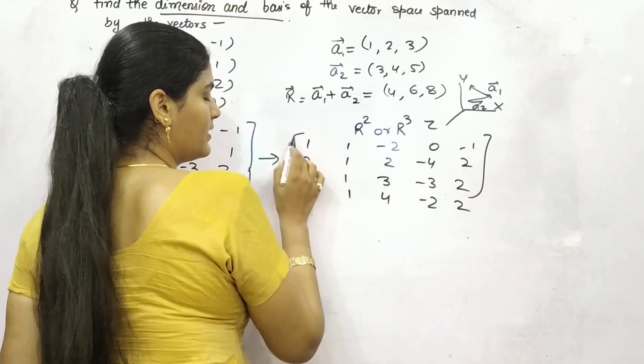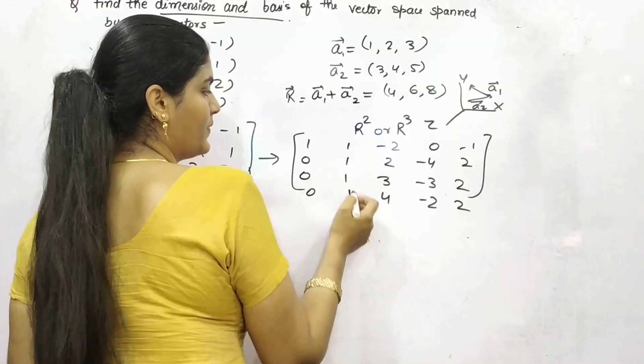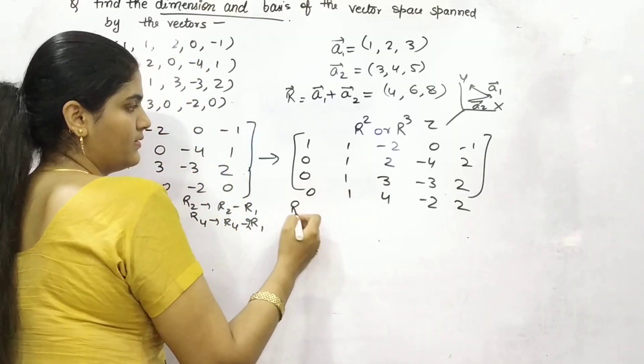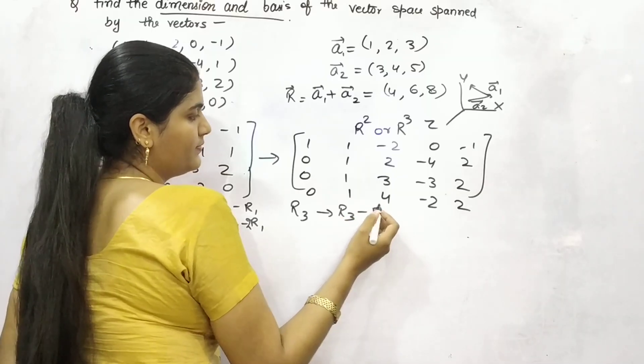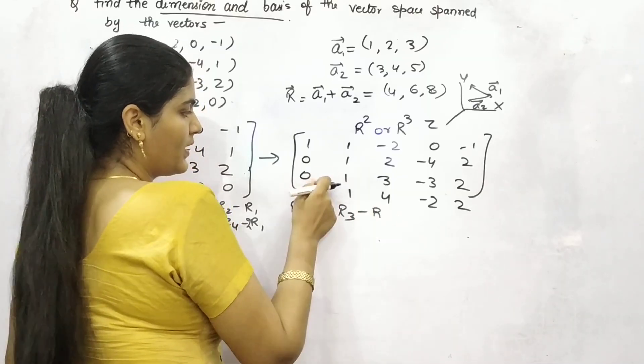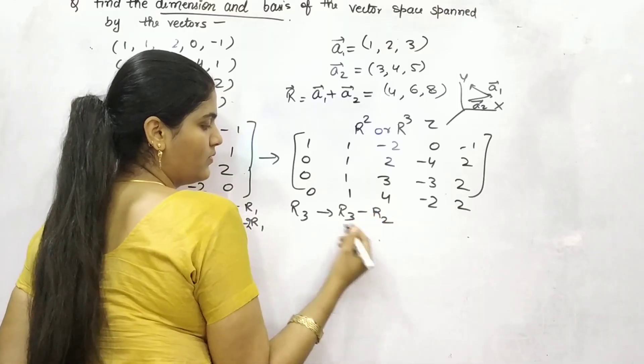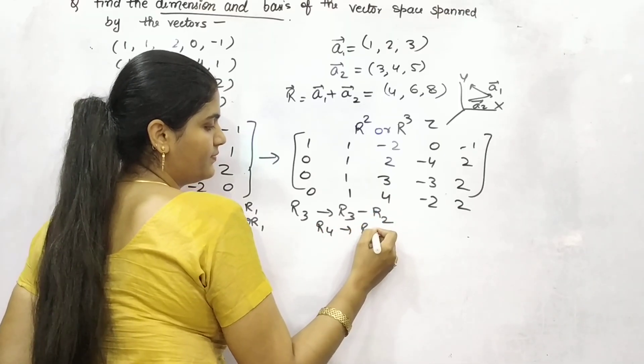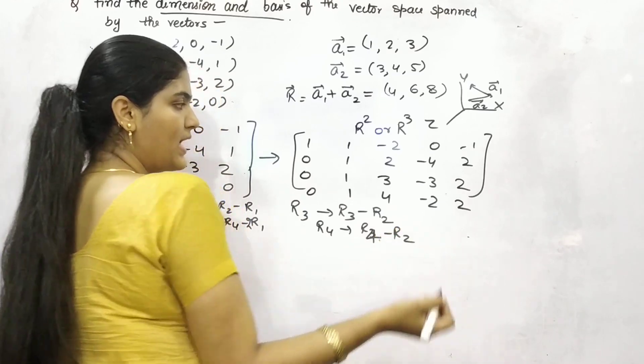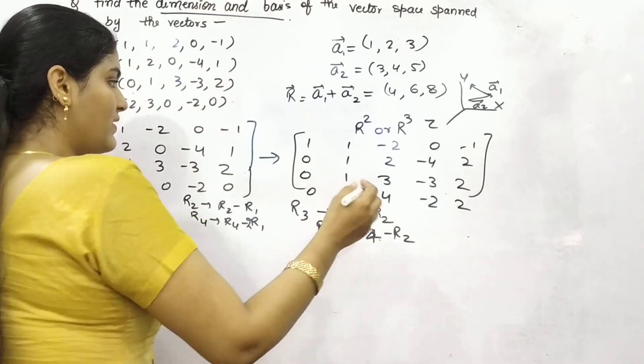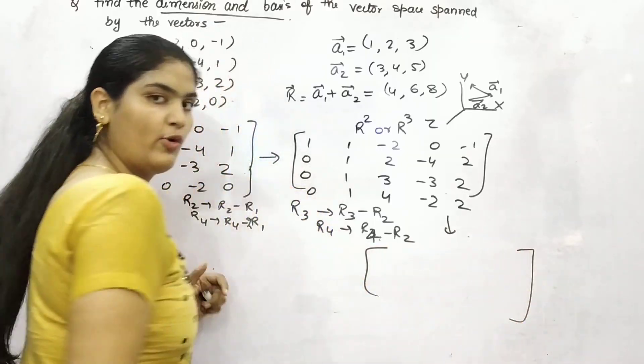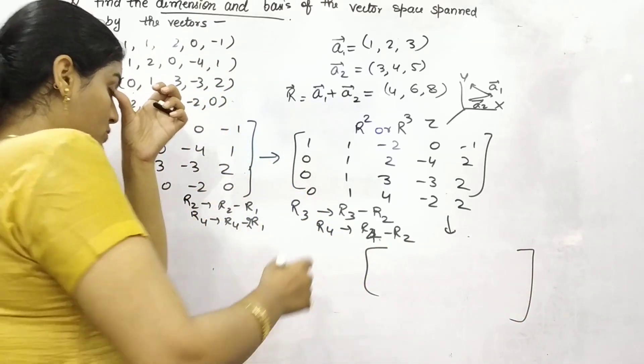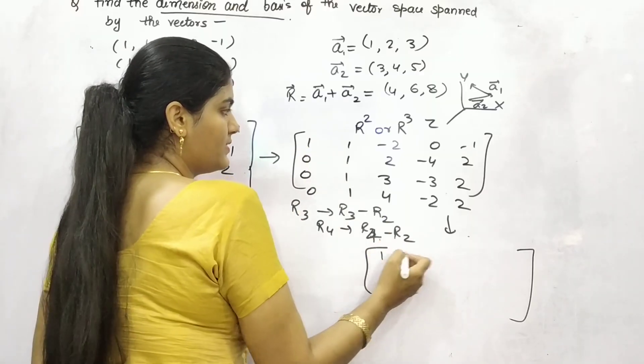Then after, this is your diagonal matrix, so make this 0. R3, if you can subtract R3 from R2 and for R4 as well. So it will become, let me do it here, I hope you can see it, so R1 and R2 are same.